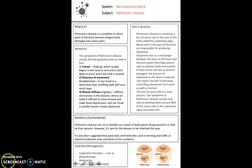Next, we're going to look at Parkinson's, which is a long-term neurodegenerative disorder of the central nervous system that mainly affects the motor system. Parkinson's involves a loss of nerve cells in the brain responsible for controlling voluntary movement. When we think about voluntary movement, we're thinking about the substantia nigra in the basal ganglia, which is what degenerates in Parkinson's disease.